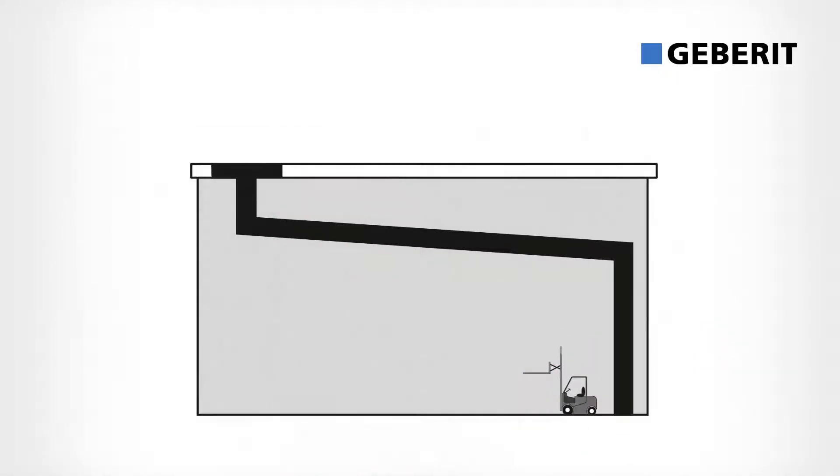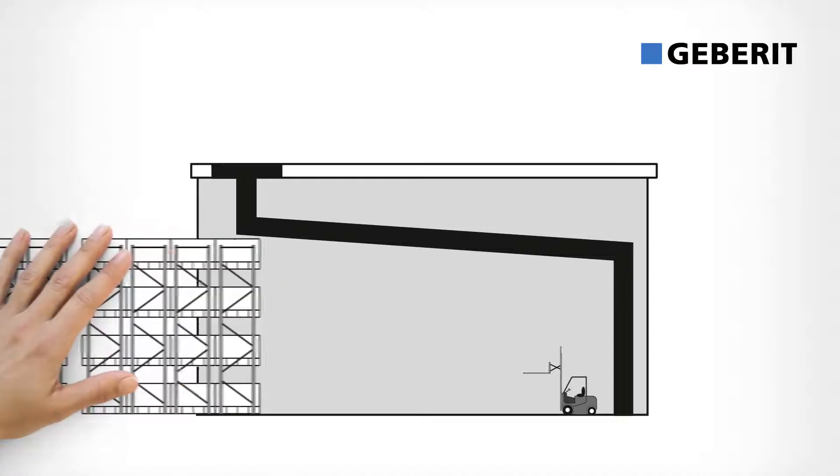In conventional roof drainage systems, the pipes require a slope. This takes up valuable space.